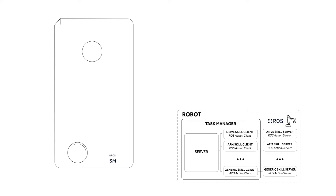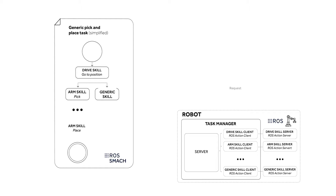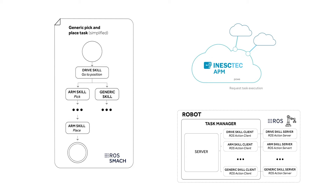Upon user instructions, execution of tasks is requested by an Advanced Plant Model, also known as APM. When the Task Manager receives the APM request, it starts executing the SMACH state machine, controlling the execution of each skill according to the flow defined in the SCXML file. The Task Manager starts by sending the Go to Drive skill, which triggers the robot's movements until the desired location. Once reached, the Task Manager moves on to the next skill and so on.